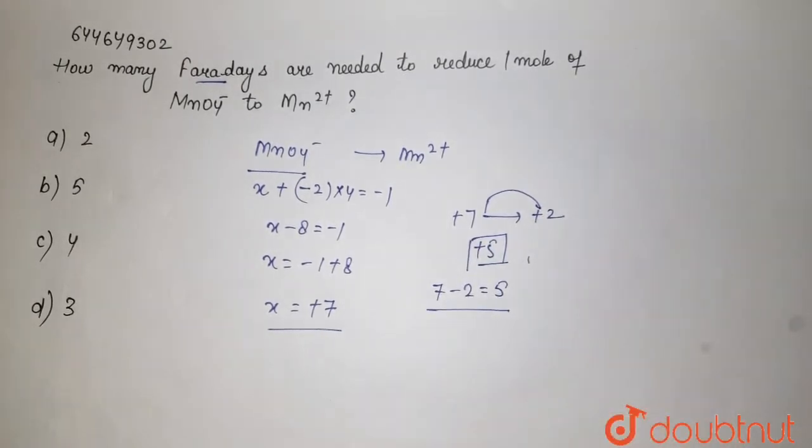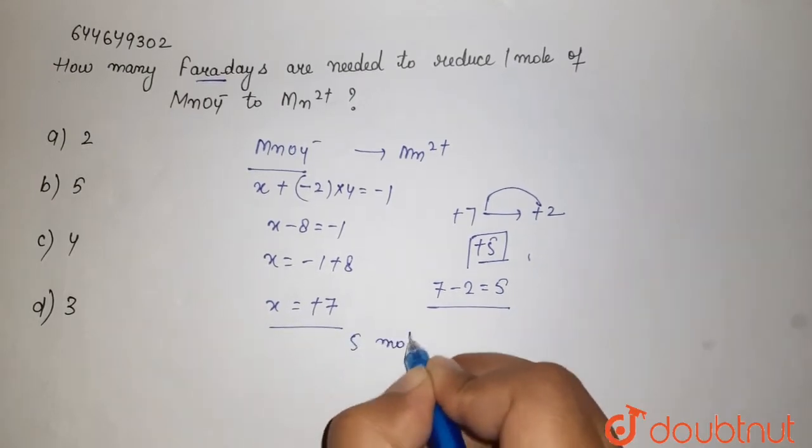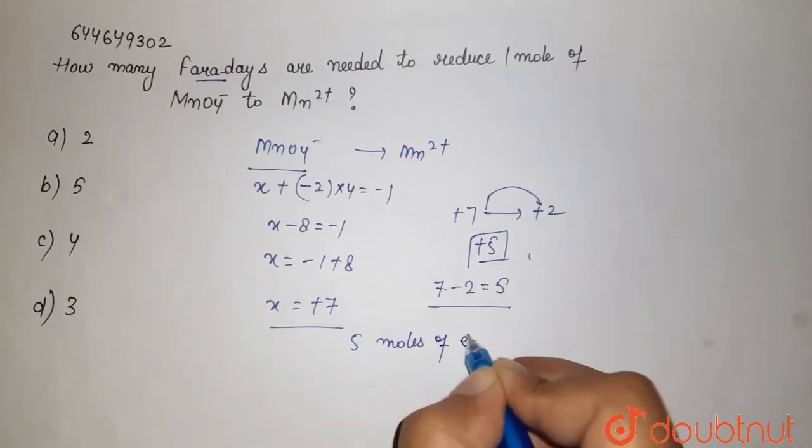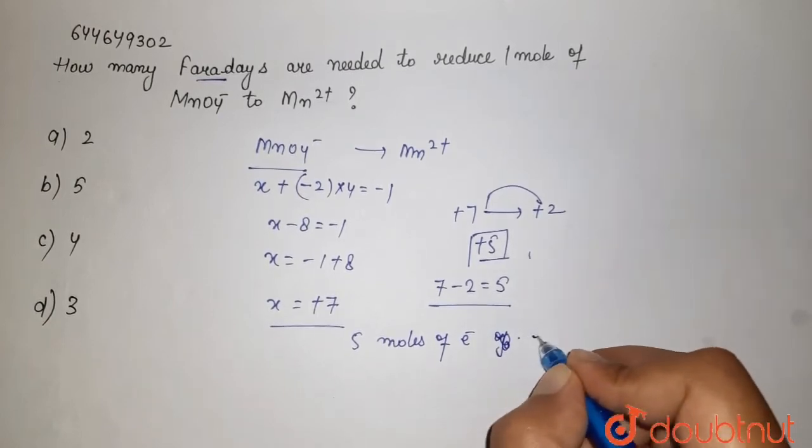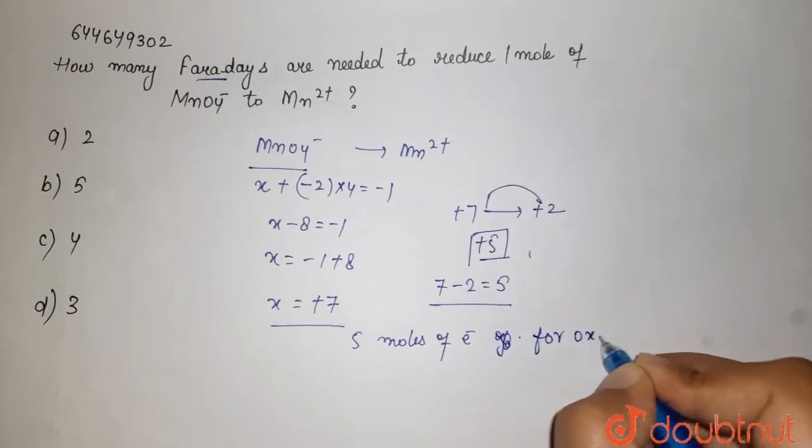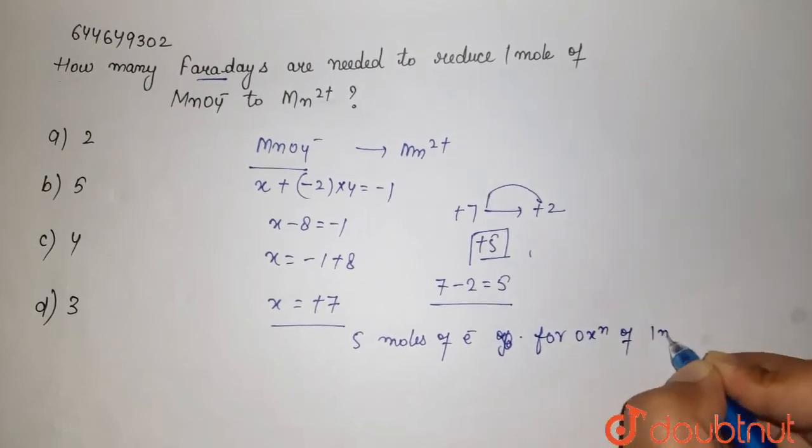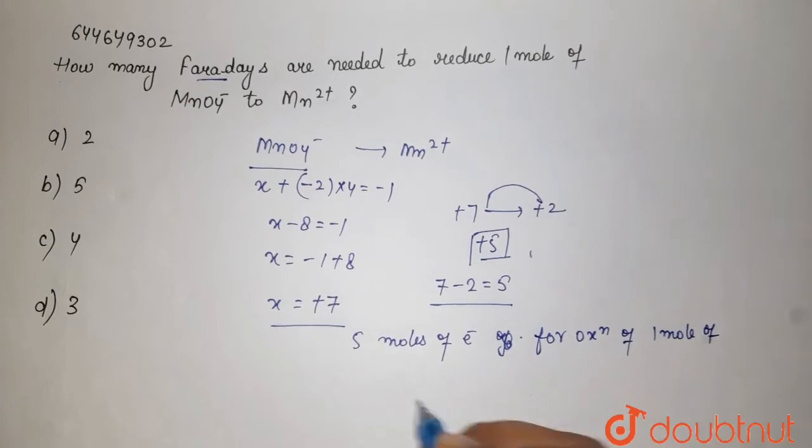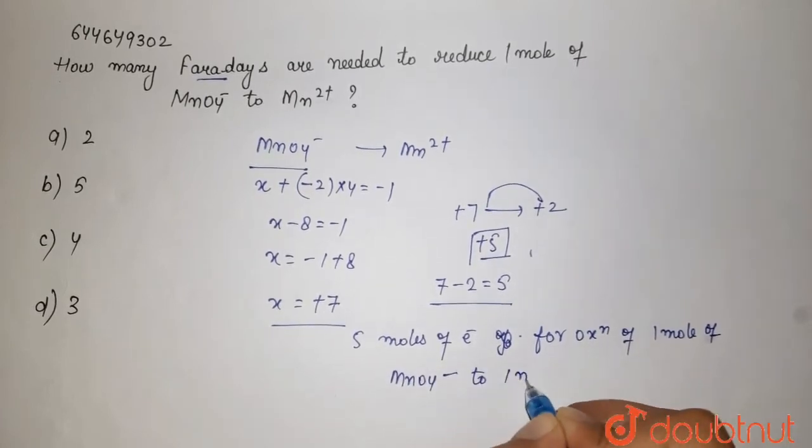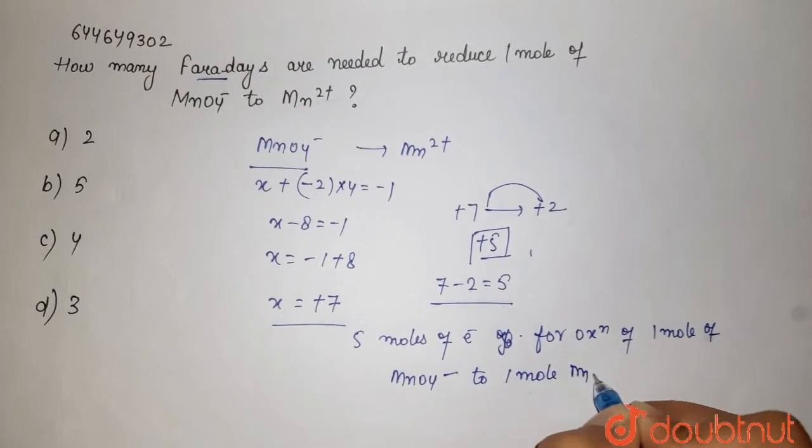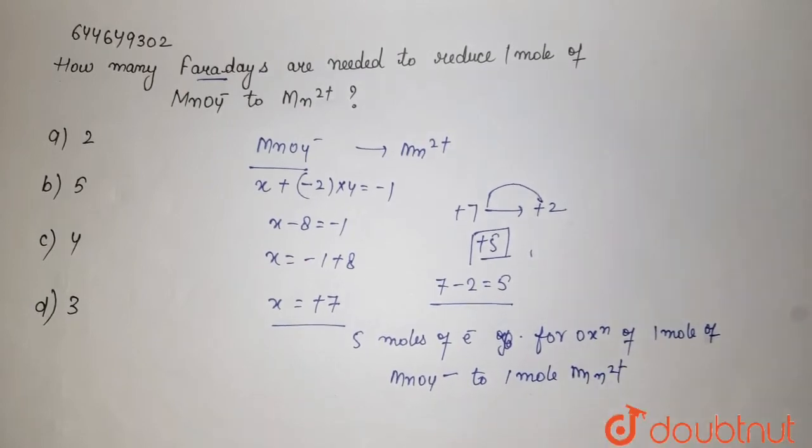...is equal to 5. This suggests that 5 moles of electrons are needed for reduction of 1 mole of MnO4- to 1 mole of Mn2+.